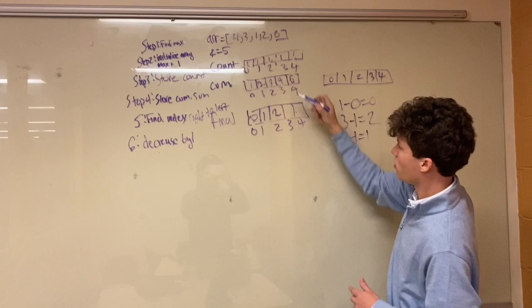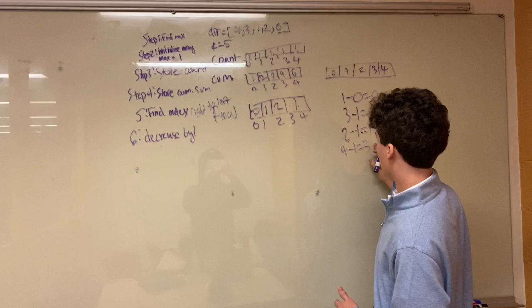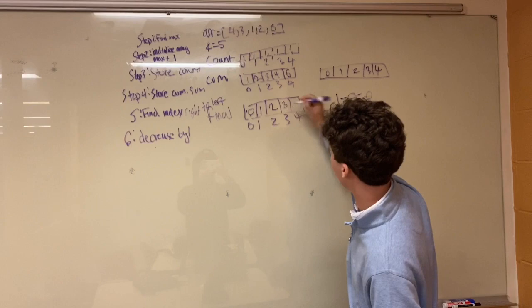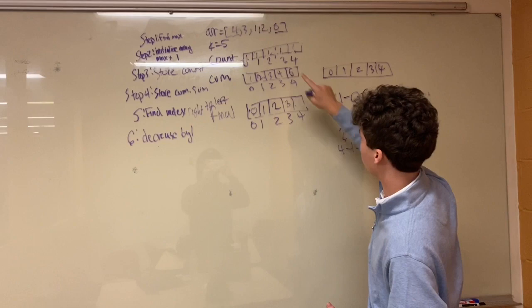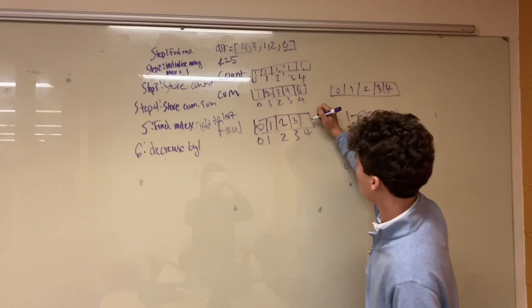Now we just keep iterating right to left. 3. 3 is equal to 4. 4 minus 1 equals 3. And we go to 3 and we put our 3. And then we put our 3. Now, last value, 4. 4 is equal to 5 in our cumulative sum. 5 minus 1 equals 4. And 4 goes into 4.